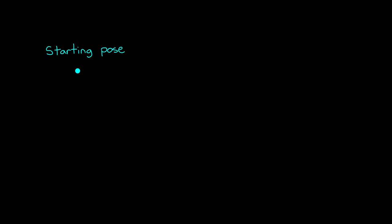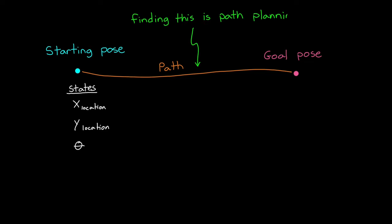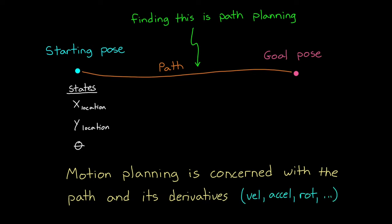We want to find a path from a starting pose to a goal pose. If we're talking about a robot that moves along the ground, there may be three states that make up its pose: X and Y location, and its orientation. A path is a sequence of pose states that smoothly connect the start and the goal, and determining this sequence is called path planning. Now path planning is just a subset of the larger motion planning problem. With motion planning, we're not just concerned with the sequence of poses, but also their derivatives like velocity, acceleration, rotation rate, and so on.